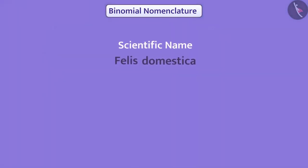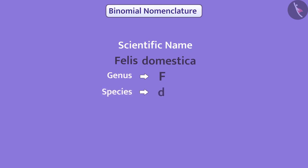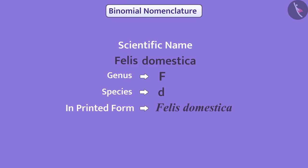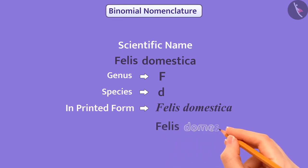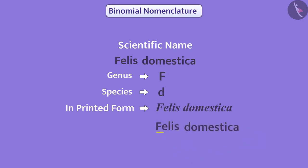While writing scientific names, we need to keep some rules in mind. The genus name must start with an uppercase letter of the English alphabet. The species name must start with a lowercase letter. In printed form, the scientific names are written in italics. But when written by hand, both the genus and the species are underlined separately.